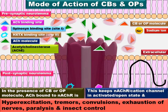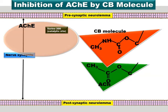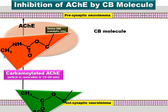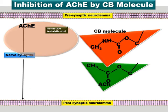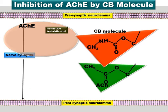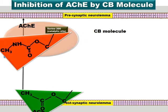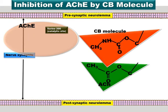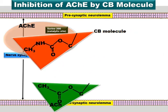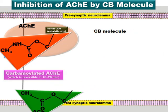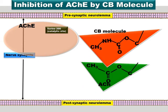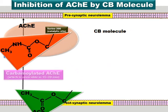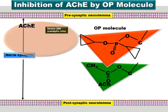The competition of a carbamate insecticide molecule with acetylcholine for the catalytic site of acetylcholinesterase and its binding to that site is known as carbamylation of acetylcholinesterase. This inhibits the function of acetylcholinesterase for at least 15 to 20 minutes, after which the carbamate molecule leaves the catalytic site — a process known as reversal.